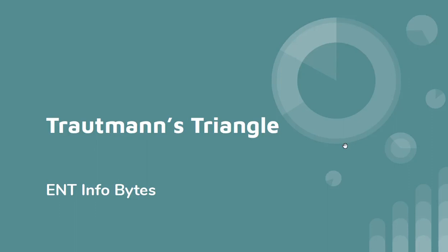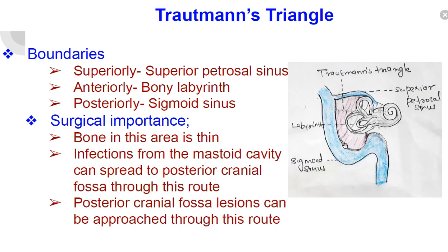Trautmann's Triangle. Boundaries are: superiorly by the superior petrosal sinus, anteriorly by the bony labyrinth, posteriorly by the sigmoid sinus.